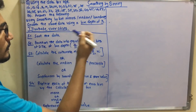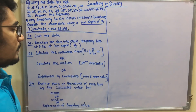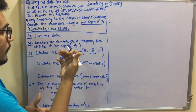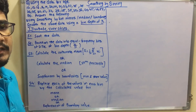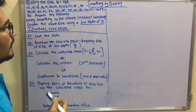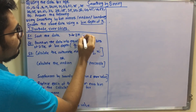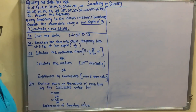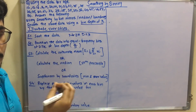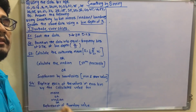Step two is to partition the data into equal-frequency bins of size equal to the bin depth, which is three. To find how many bins are needed, we use the formula n divided by d, where n is the number of data points and d is the bin depth. Here n is 27 and d is 3, so 27 divided by 3 gives us nine bins.